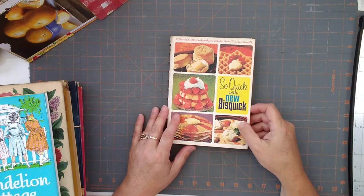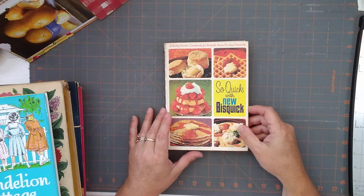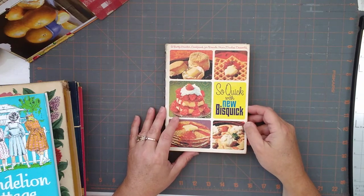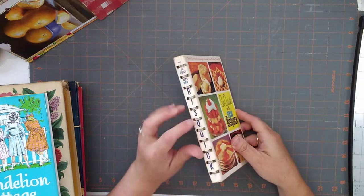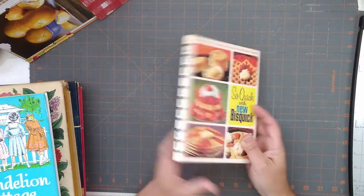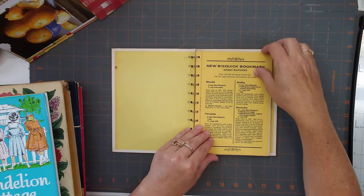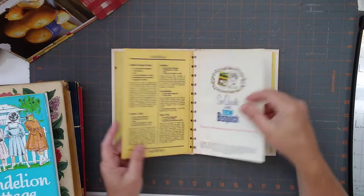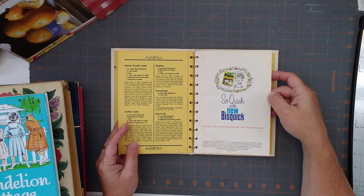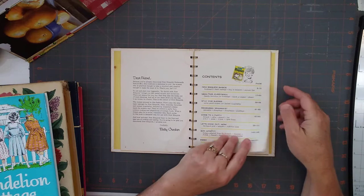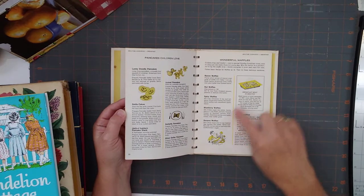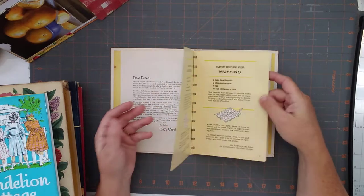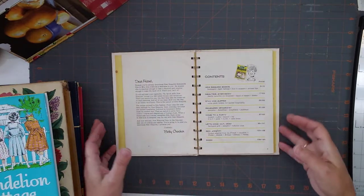Okay, one of the other books I got, because I'm working on two recipe journals, it's a Betty Crocker, So Quick with New Bisquick. And it's got this type of spine. Let's see if I can find a date. 1967. And again, it's got all the cool colors and graphics in it. So that was just awesome. That was a great find.